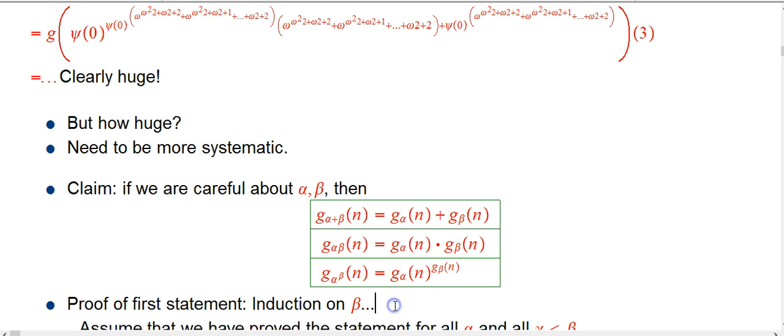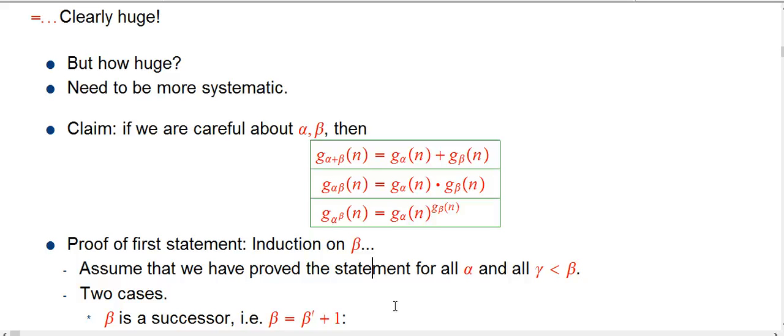Let me give a short but fairly careful proof of the first statement. This is a good example of how a simple induction proof works with ordinals. It's what would be called strong induction. We're going to assume it's induction on beta. We're assuming that we've already proved this statement for all alpha and all ordinals gamma that are less than beta. We just want to prove it for beta.